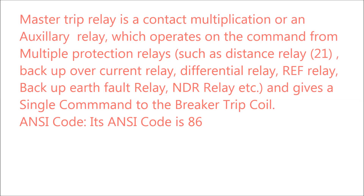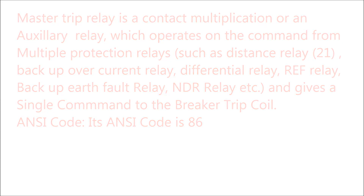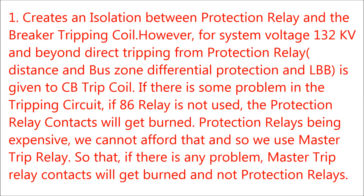So that the trip coil may be energized and it will lead to the opening of the breaker. Why we use Master Trip Relay? Number 1: It creates an isolation between protection relays and the breaker tripping coil. For system voltage beyond 132 kV, direct tripping from protection relays is given to the circuit breaker tripping coil. If there is some problem in the tripping circuit and the 86 relay is not used, the protection relay contacts may get burned. Since protection relays are expensive, we use Master Trip Relay so that if any problem occurs, the Master Trip Relay contacts will get burned and not the protection relays.